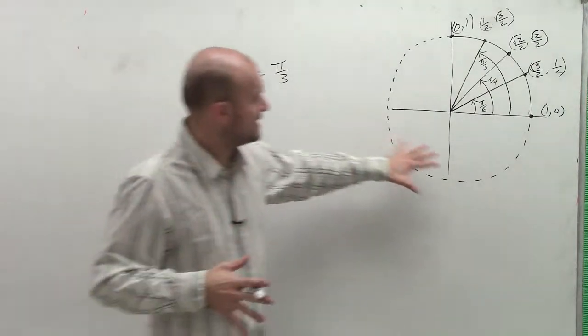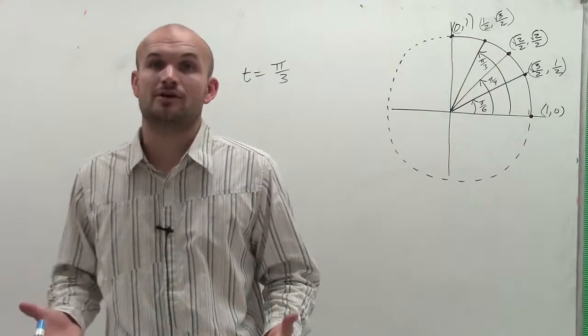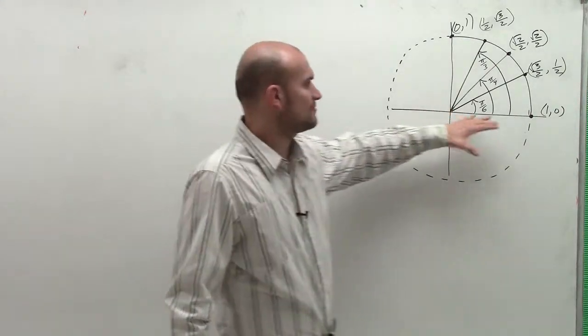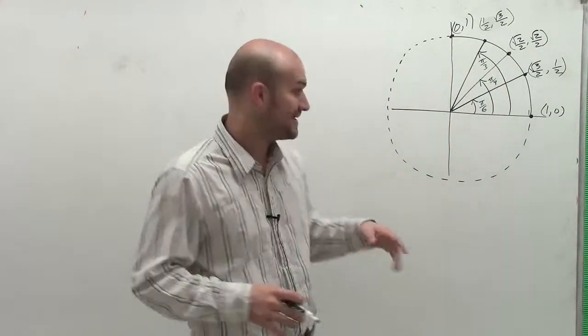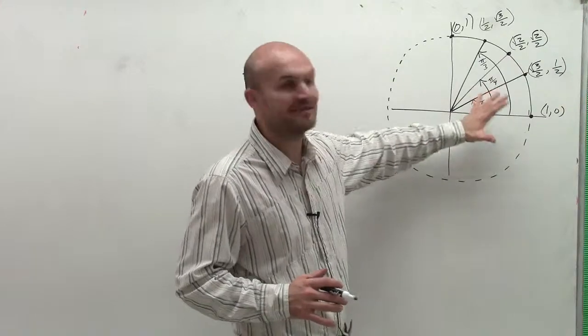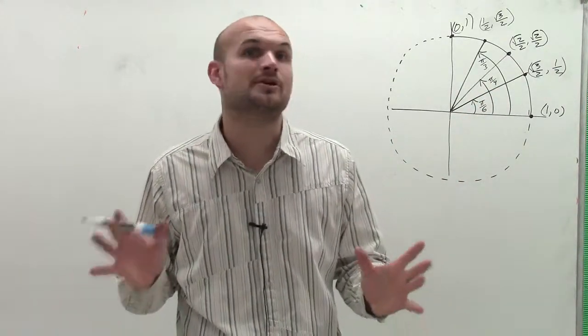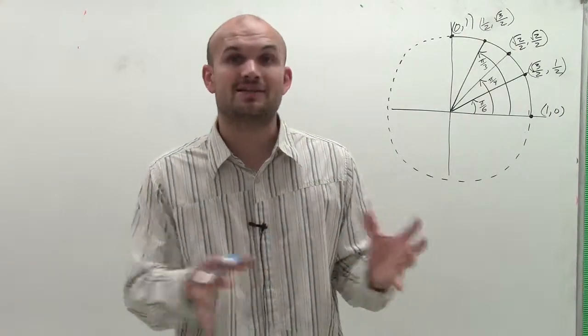I have a unit circle here. When we're dealing with finding the coordinate value of our angle, we use the unit circle which gives us values for certain angles. I'm going to be concerned with the first quadrant because that will help us find the rest of our angles.